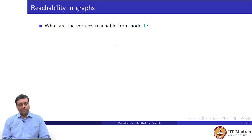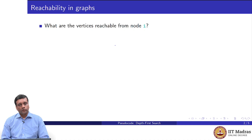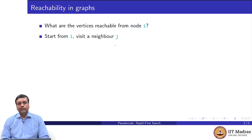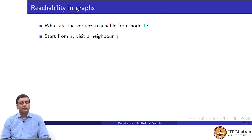Suppose we start at a node i in a graph and we want to know what are the nodes or vertices that are reachable from node i. The obvious thing to do is to start exploring the neighbors of i. There are two ways: we can explore all the neighbors, then the neighbors of the neighbors and so on — this is called breadth first search. I find all the vertices reachable in one step, then two steps, then three steps and so on. This is breadth first search and it will eventually find all the vertices.